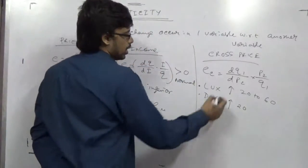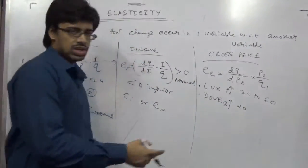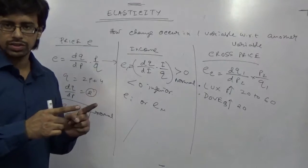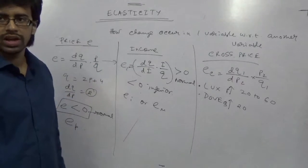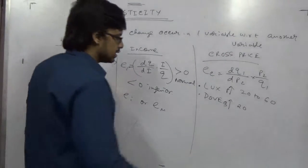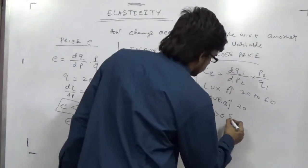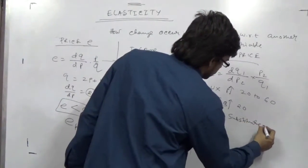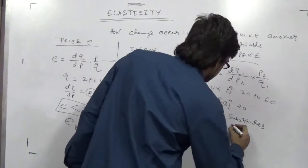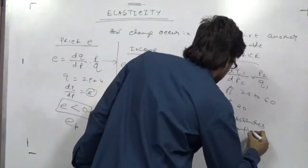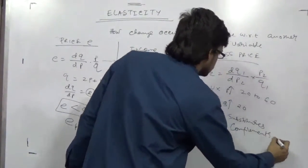Suddenly Lux's price increases so Dove's quantity increases. So in general, cross price elasticity for two substitutes is greater than 0, and ec is less than 0 for complements.